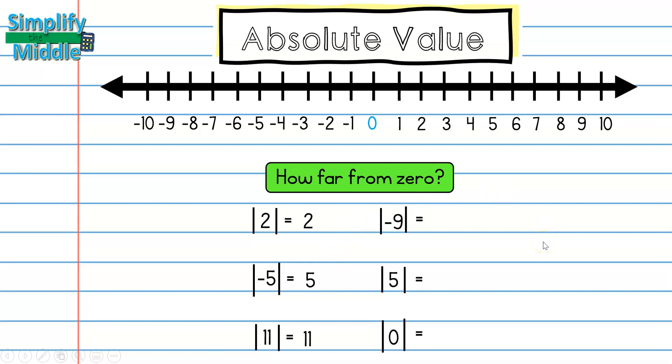Hopefully you've taken some time to try these by yourself. The absolute value of negative 9 is the distance from negative 9 back to 0, which is positive 9. The absolute value of 5 is 5.